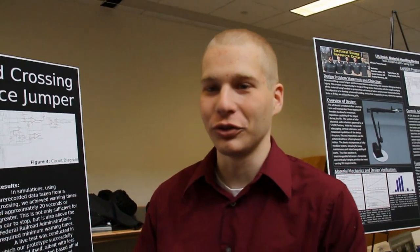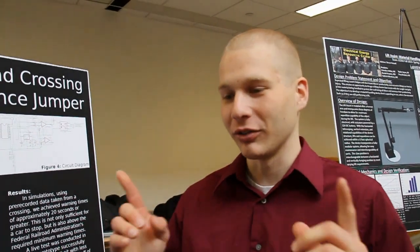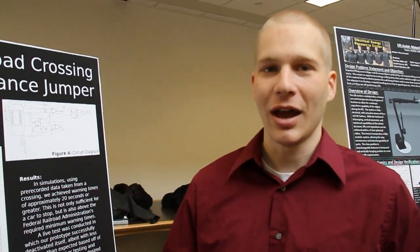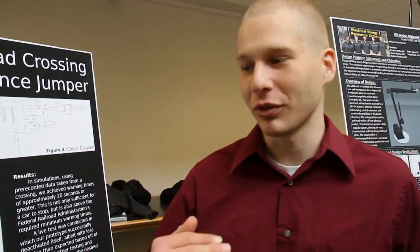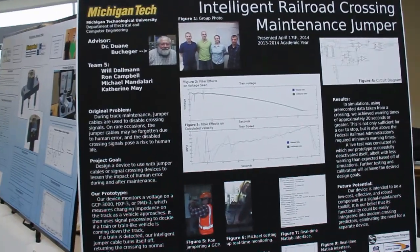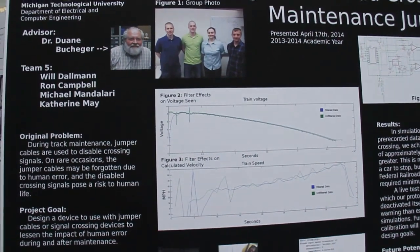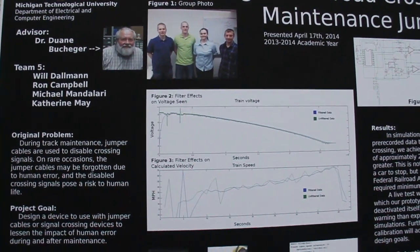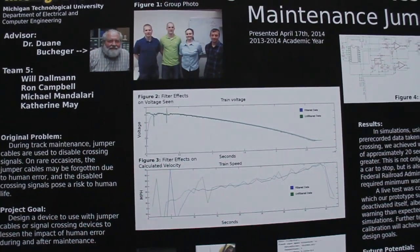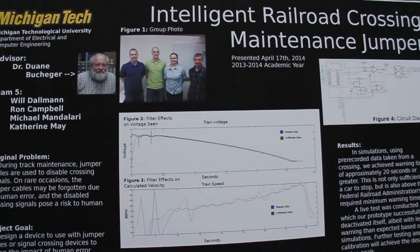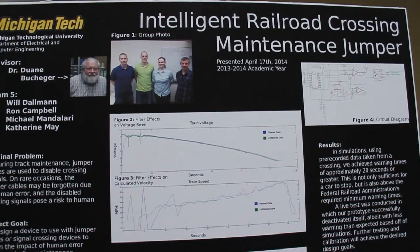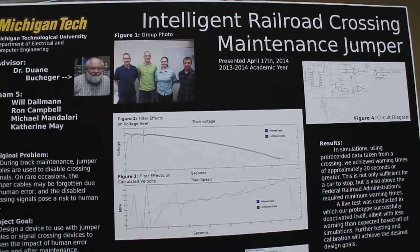Our approach was to look for a consistent velocity and set a velocity threshold that a maintainer specified should be above. Right over here, there's a signal output from the grade crossing — which this is compatible with — that corresponds to the impedance dropping on the track when a train is approaching.